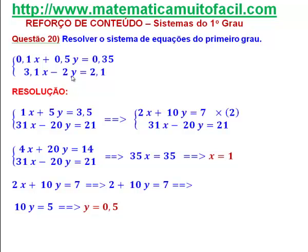A segunda equação, eu vou multiplicar toda ela por 10. O 3,1 vira 31x, o 2 vira 20 e o 2,1 vira 21. Ficou tudo inteiro bonitinho.